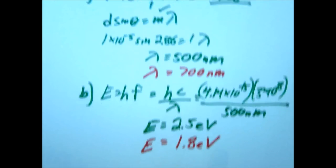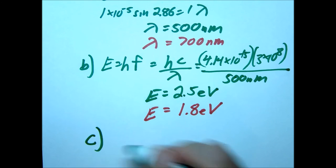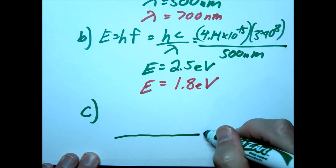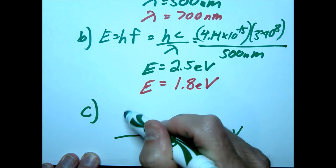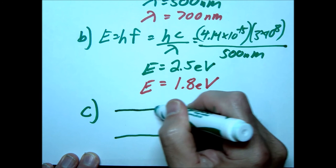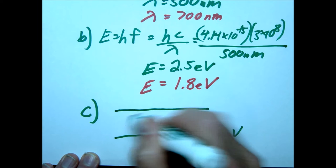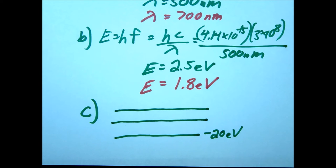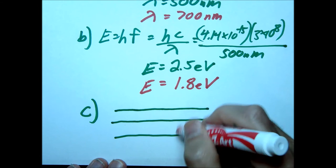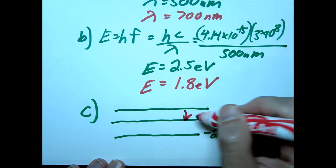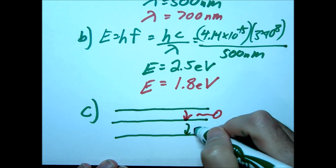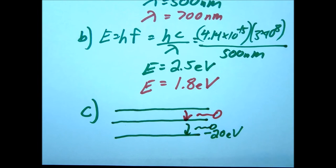Letter C asks for a possible energy level diagram. Remember, the problem said at ground state we're at negative 20 eV. We excite up to the third state and subsequently release two photons. The order could be different. You could release red first then green, or green first then red. That would change what you get. I'll do red then green.